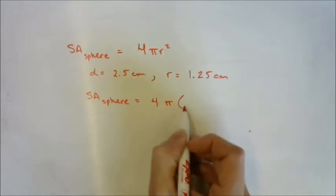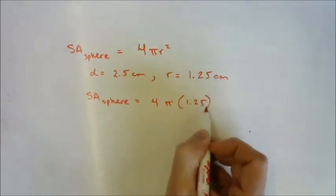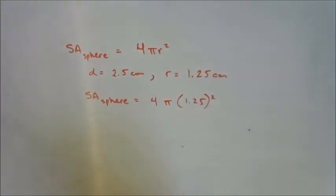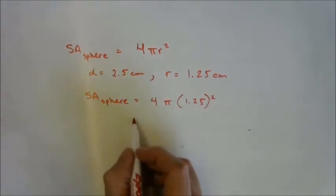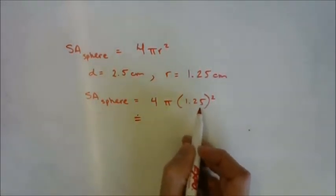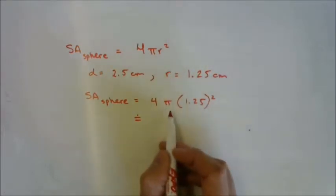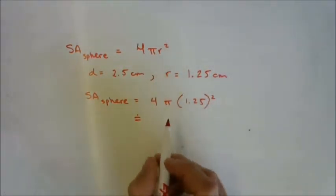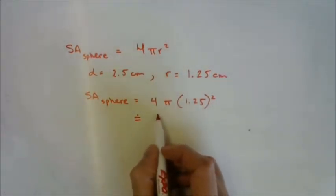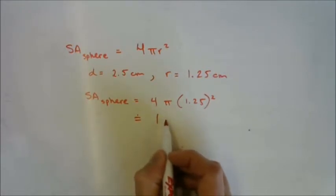Four times π times 1.25 squared. You can put that whole thing in your calculator: 1.25 squared times four times π, and you will get approximately, rounded to one decimal place, 19.6 centimeters squared. You can go ahead and double check on your calculator.